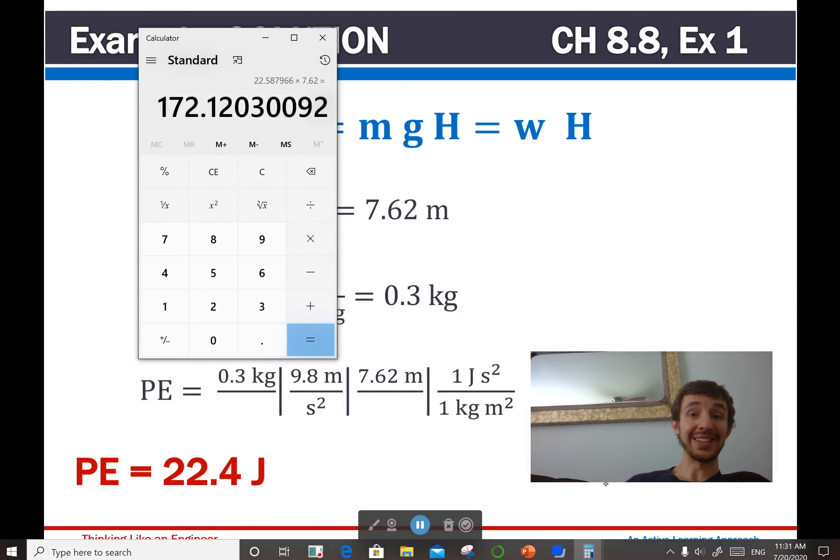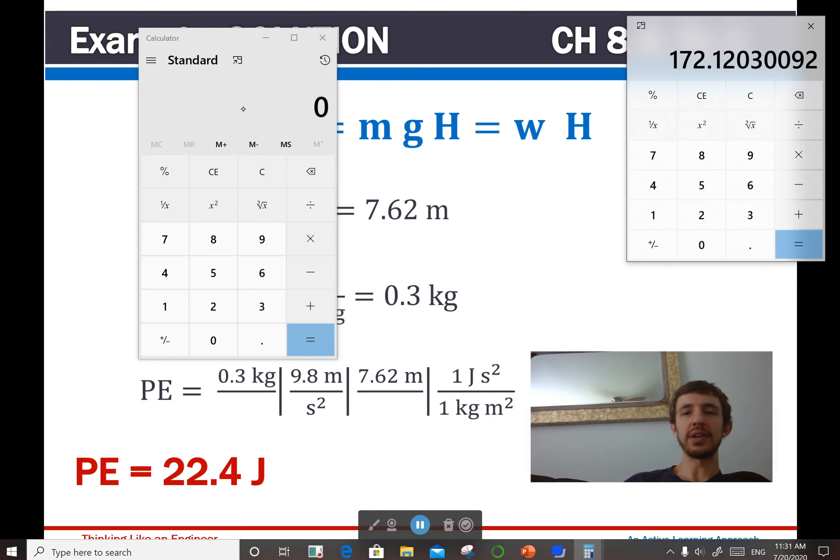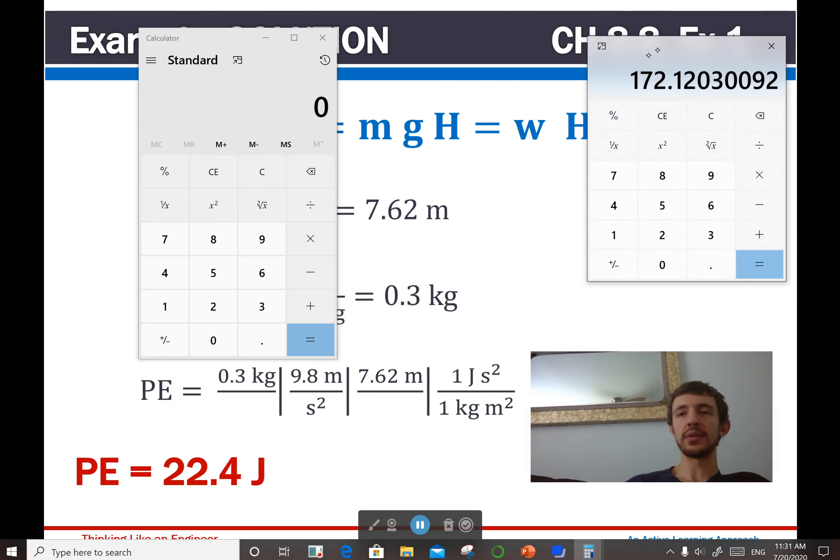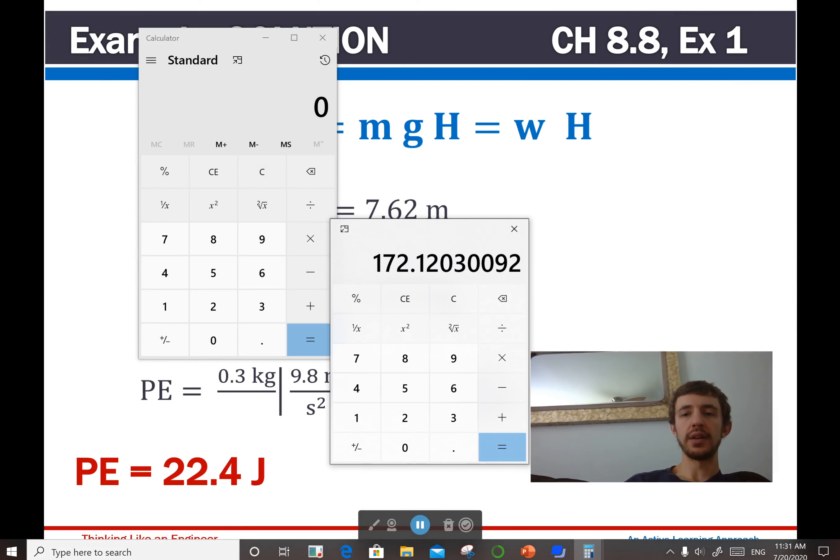Oh, I did 3. I believe I said 0.3. That doesn't actually give me everything I'm trying to figure out here, though. Okay. Let's try again. 0.3 times 9.81. Yeah. Don't know how I did that. Times 7.62. 22.4. Okay. So, if you plug things right into your calculator, it will work.